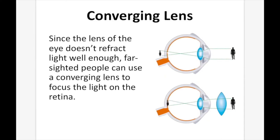To fix hyperopia, we use a converging lens, which helps the eye refract the light quicker. In the top diagram, the light rays are refracted too slowly and the image is created after the retina. Adding a converging lens allows the light rays to converge faster, bringing the image together right on the retina.